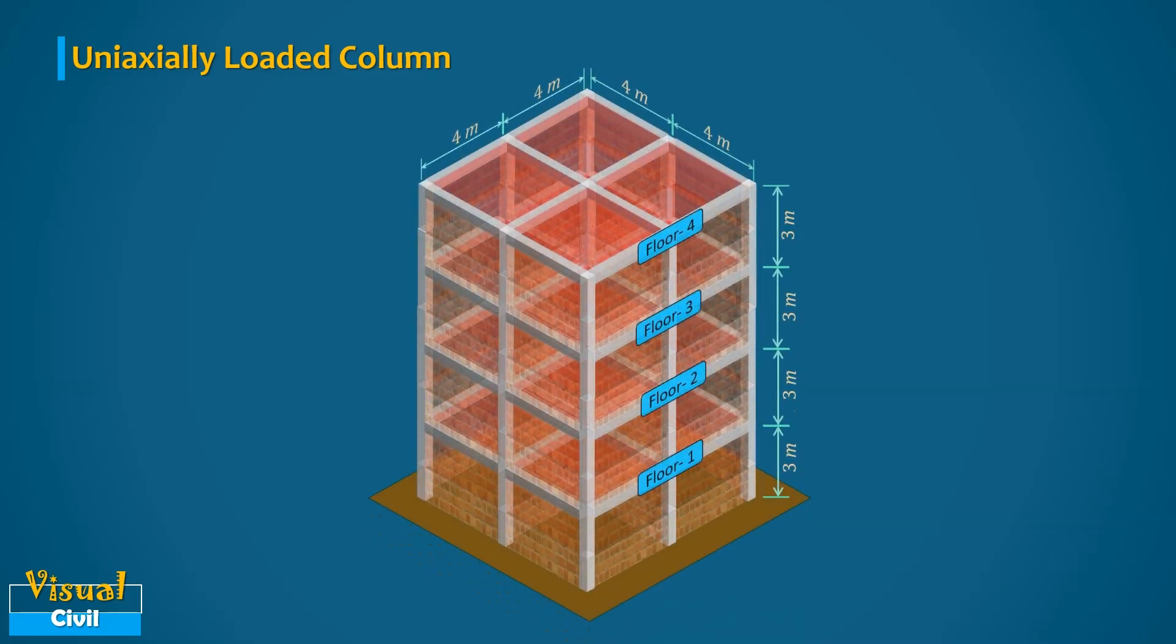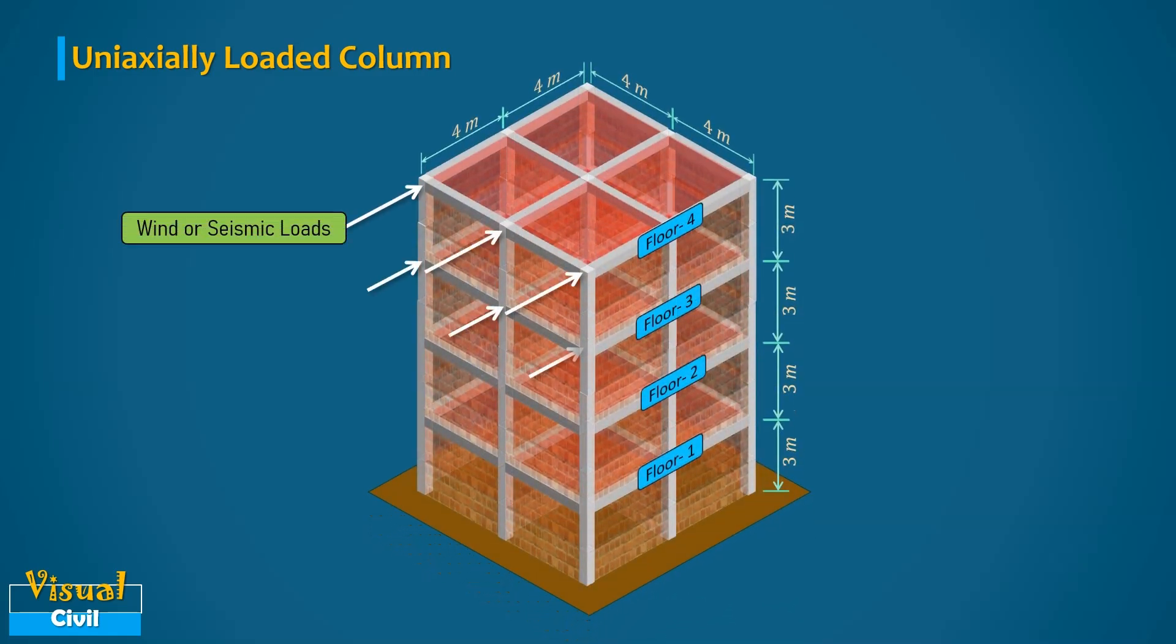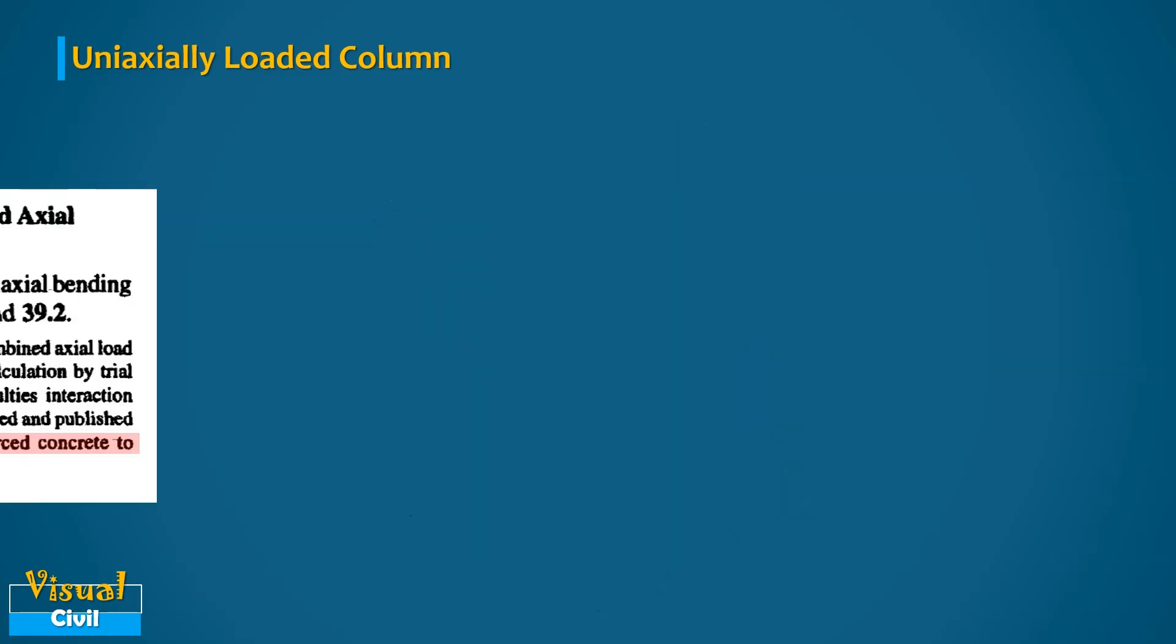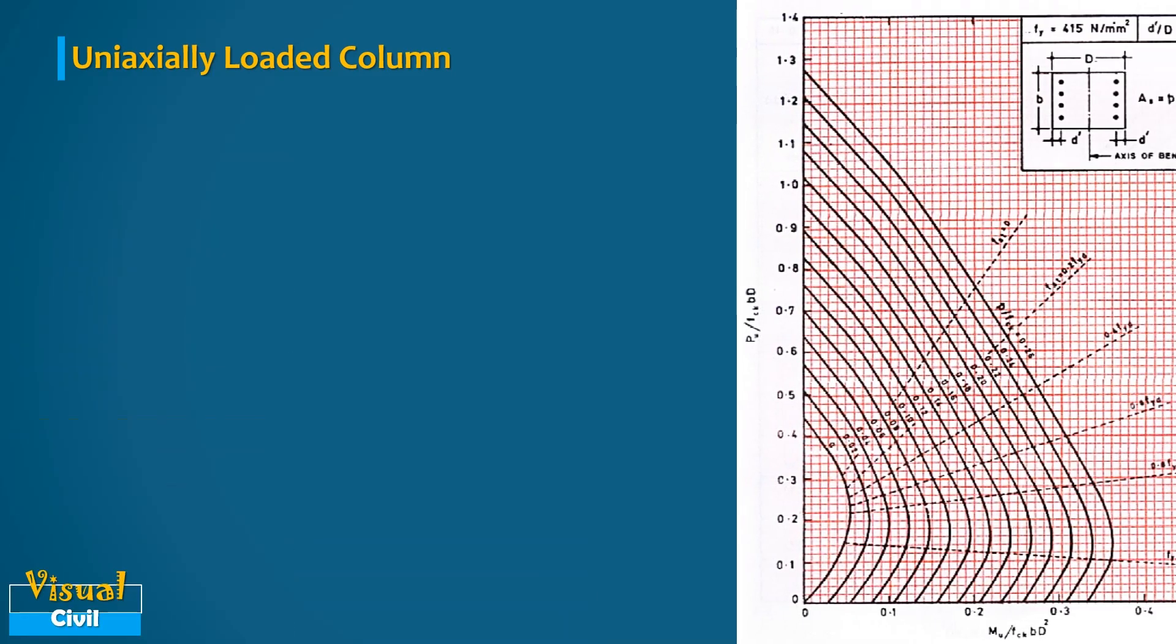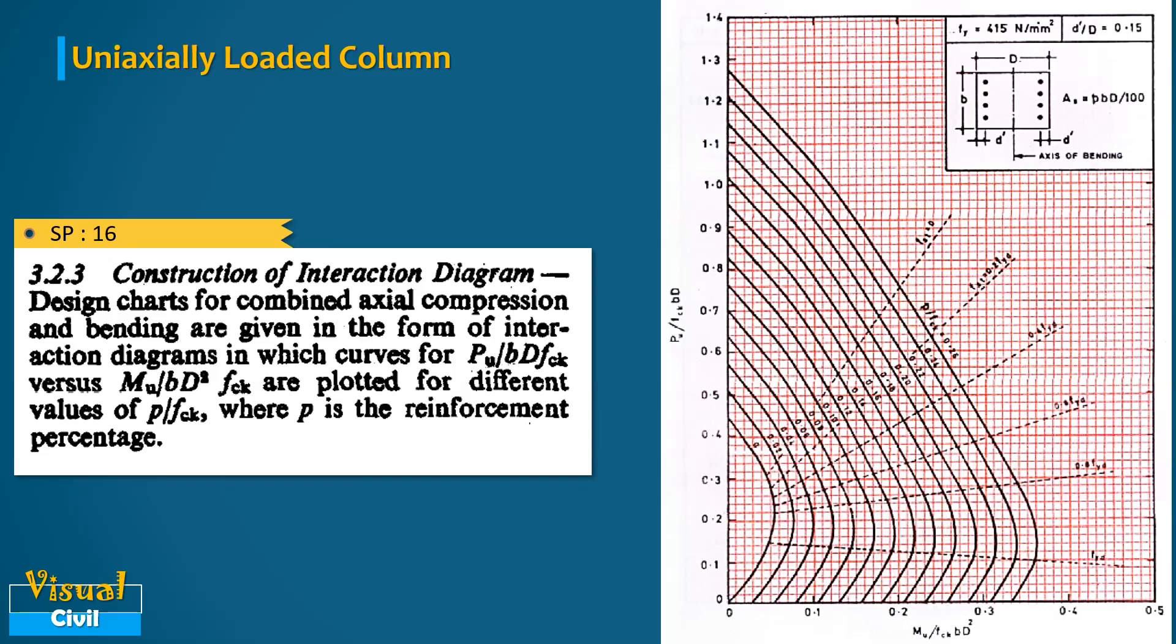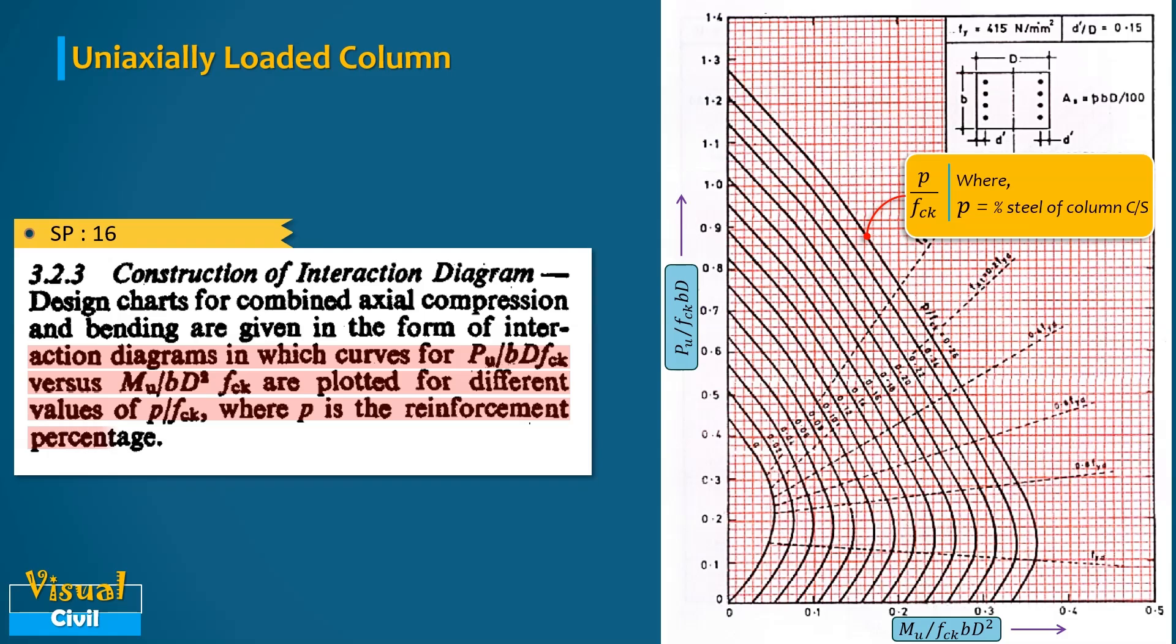But under lateral loads like wind or seismic, indeed all columns in multi-storied building are subjected to significant uniaxial bending moment. Such columns are also false into this category. IS 456-2000 gives the design methodology for this type of column. The clause 39.5 suggests the use of interaction chart given in SP16 for the simplified design. In these charts, the curves for PU by FCKBD versus MU by FCKBD square are plotted for different values of P by FCK where P is the reinforcement percentage.